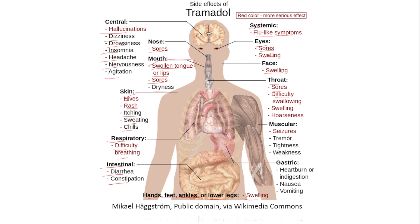Systemic effects may include flu-like symptoms, eye soreness and swelling, facial swelling, throat soreness, difficulty swallowing, and hoarseness. Regarding muscles, seizures, tremor, tightness, and weakness may occur as symptoms of serotonin syndrome. Stomach effects include heartburn, indigestion, nausea, and vomiting.